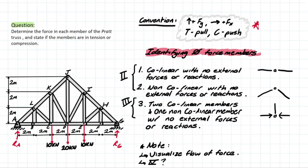The first thing I'm going to do is look for joints with two members connected. Outside of the pin and the roller, we can see there are only two joints that have two members connected. Since there's a reaction at those joints, we know those members are going to have forces inside them. Now we can look at joints with three members connected, starting with joint B. We notice we have two collinear members and one non-collinear member with no external forces applied, so that non-collinear member is going to be a zero force member.